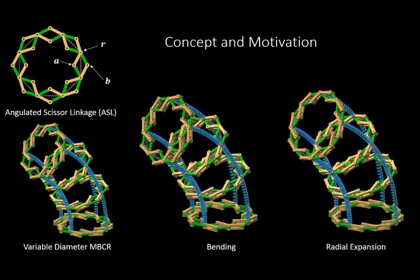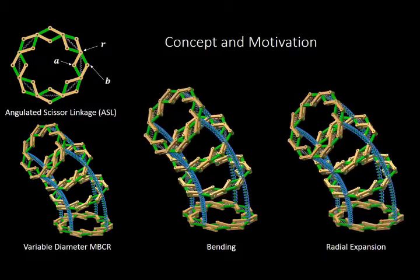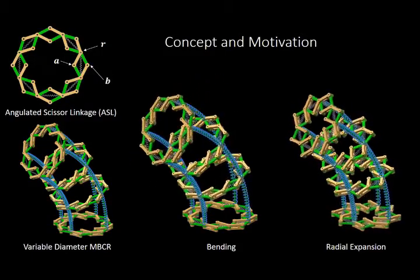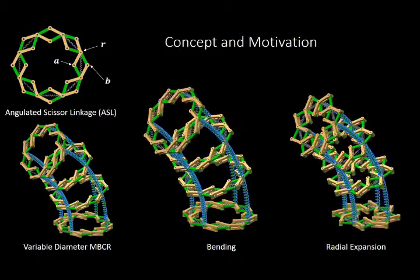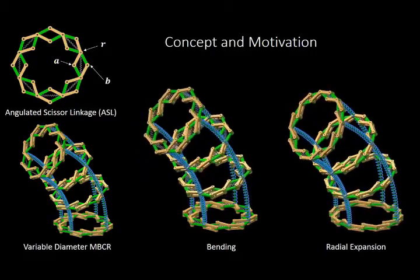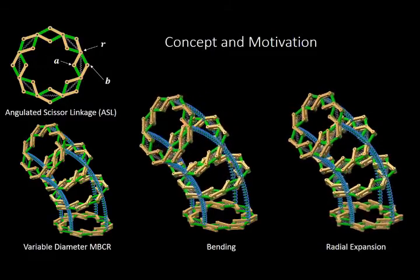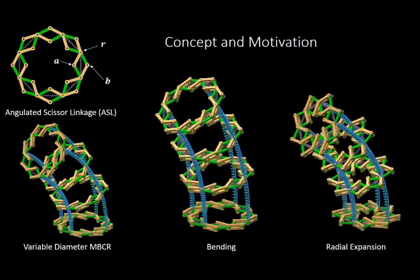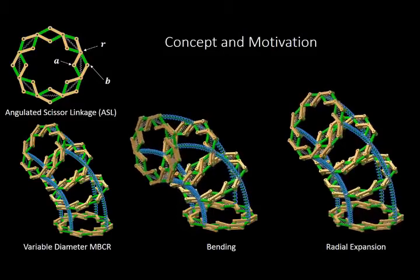The first animation shows a continuum robot bending in a given plane by pushing and pulling its secondary backbones. The second animation shows the continuum robot varying its radius by simultaneously actuating the angulated scissor linkages and its secondary backbones.